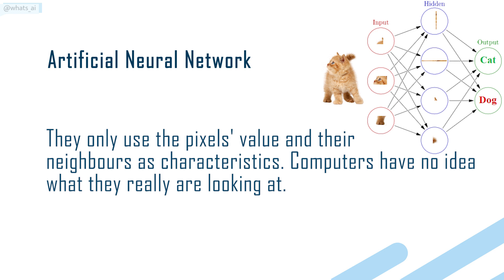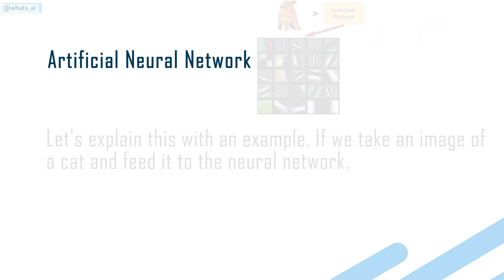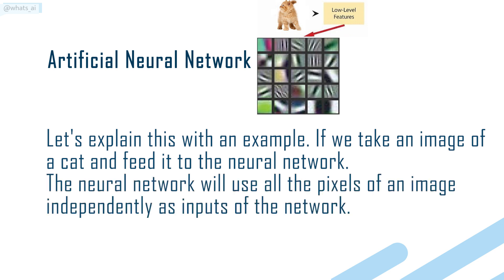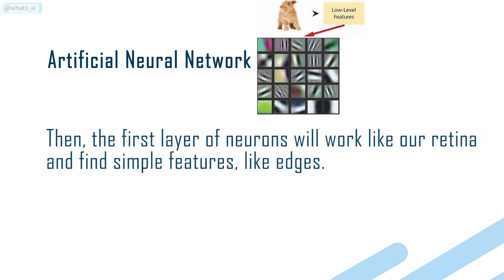Computers have no idea what they really are looking at. If we take an image of a cat and feed it to the neural network, the neural network will use all the pixels of an image independently as inputs of the network. Then, the first layer of neurons will work like our retina and find simple features, like edges.